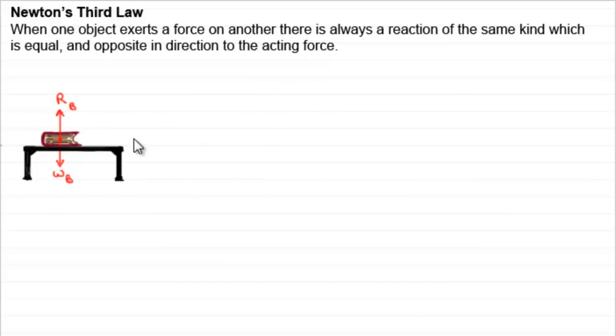Now, suppose we took our book and table and separated them, and looked at the forces acting on each of these objects. We've already seen that, for the book, we've got the weight of the book acting downwards, Wb. And we had this upward force, the normal contact force, the reaction. Let's just mark it back in here again, Rb, the reaction on the book.